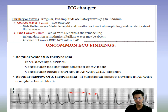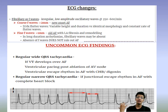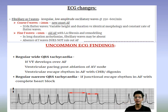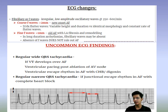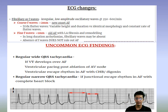Uncommon ECG findings that are often misinterpreted: a regular wide QRS tachycardia — if you see a wide QRS tachycardia, don't assume it's VT. Look carefully. WPW developing over AF, ventricular pacing, post-ablation of AV node, or a ventricular escape rhythm in AF can cause this. There can also be regular narrow complex QRS tachycardia if junctional escape is present in AF with complete heart block. An irregular RR interval makes a clear-cut diagnosis of AF.